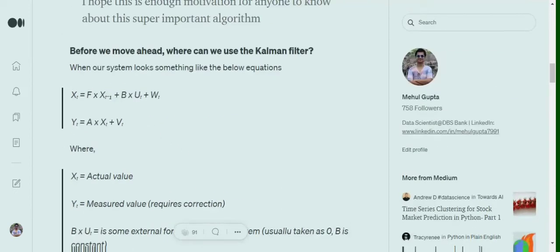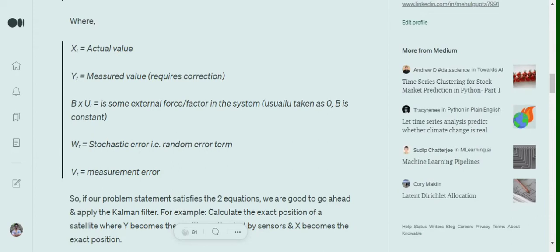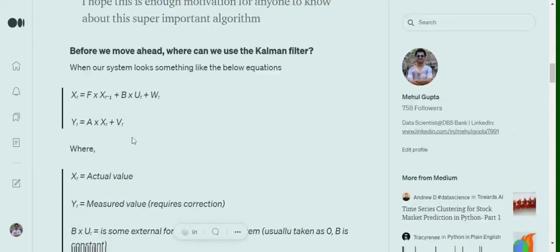Now Y_t is the measured value. And V_t is the measurement error. So like for example, when you're measuring our weight, then the measurement error can be the error of the weighing machine. So you can understand that how X_t and Y_t are different. Y_t is the predicted one, is the one measured. And X_t is the correct value.